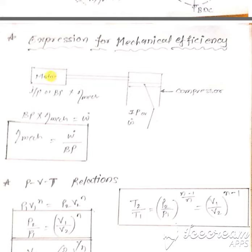Since the motor is connected with the compressor by a mechanical device or coupling, the power at the end of the shaft of the motor is the brake power. Since power is transmitted through a mechanical device, it will have some mechanical efficiency.